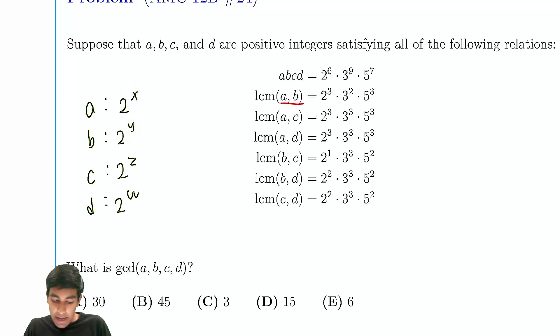So LCM would just take the maximum exponent. So LCM of AB, maximum of x and y must be 3. Similarly, AC, maximum of x and z must be 3. X and w, maximum must be 3. So from here, we can deduce x must be 3.